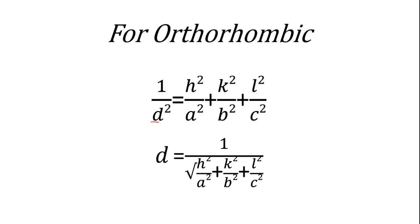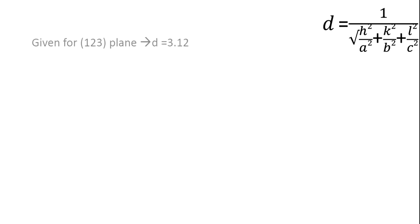On rearranging, we'll be getting it like this: d equals 1 by root of h square by a square plus k square by b square plus l square by c square. This is the equation.